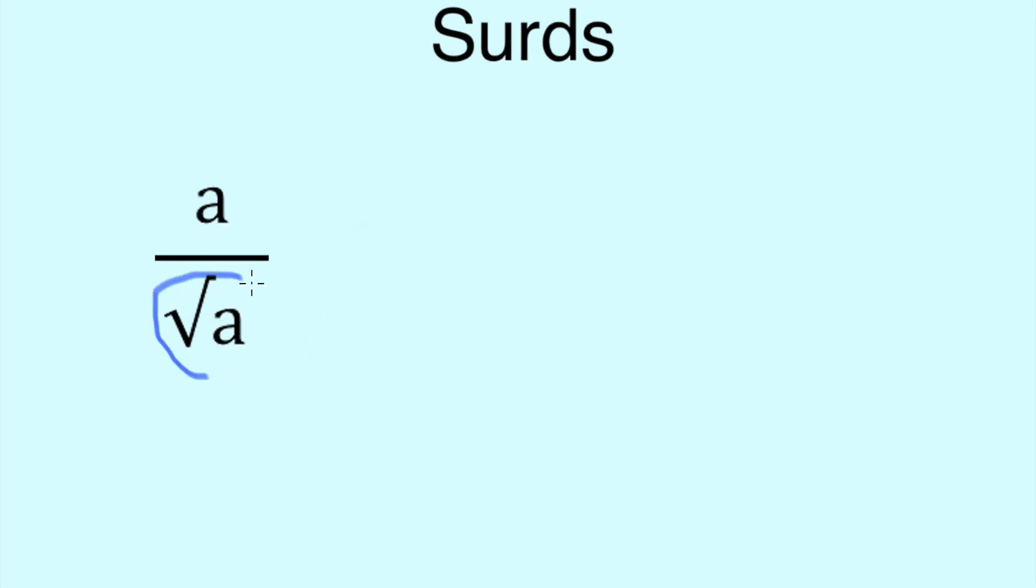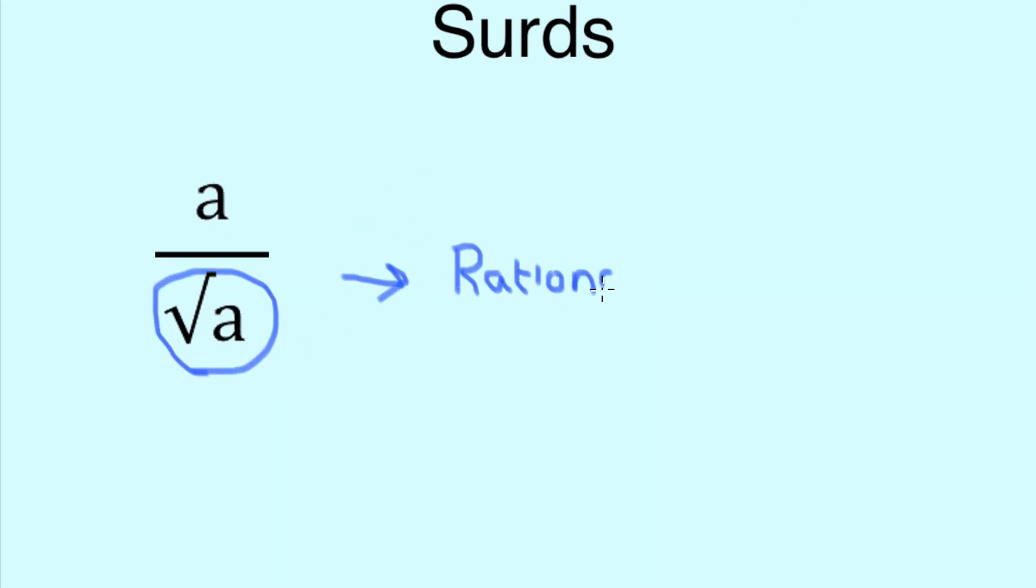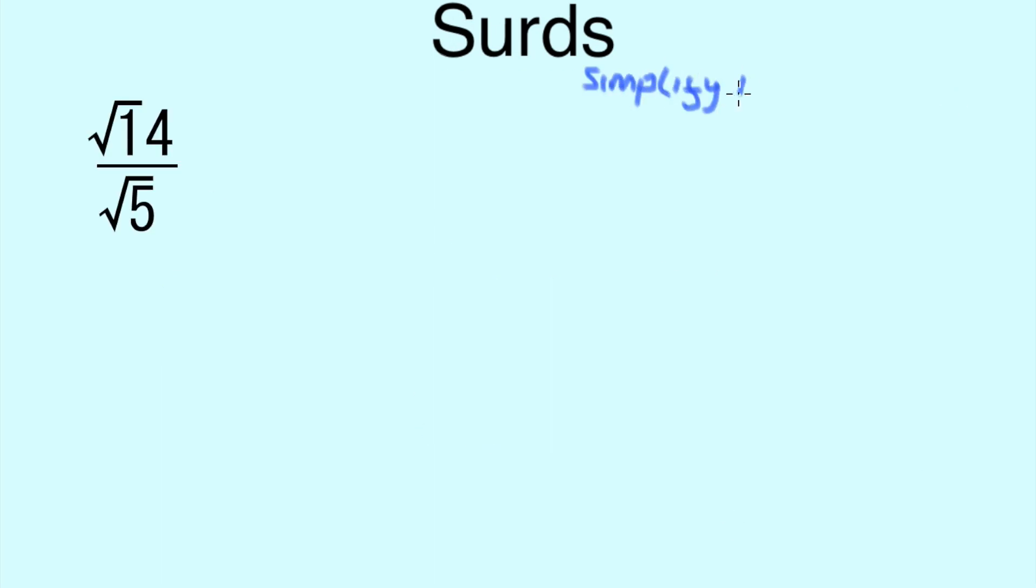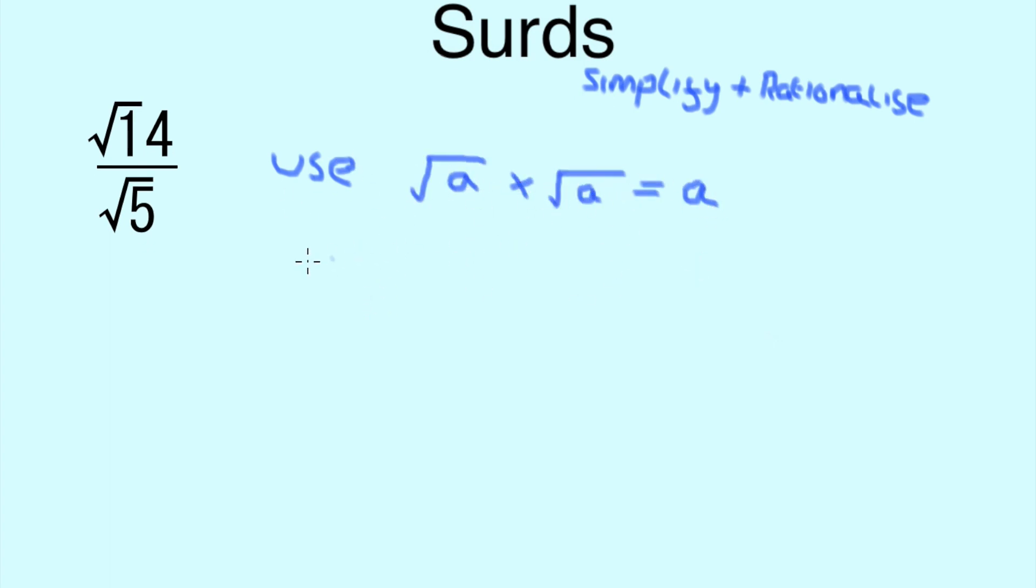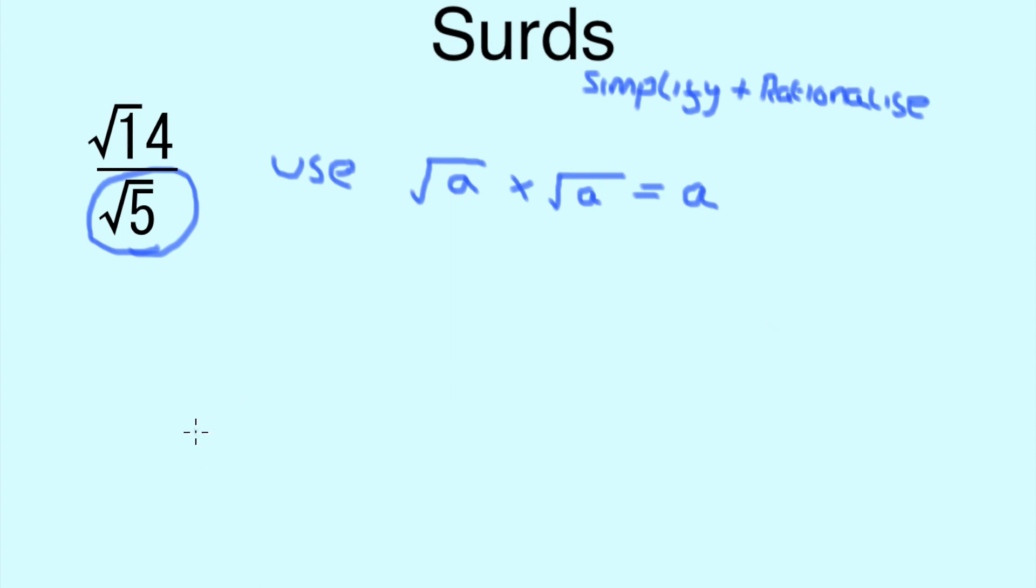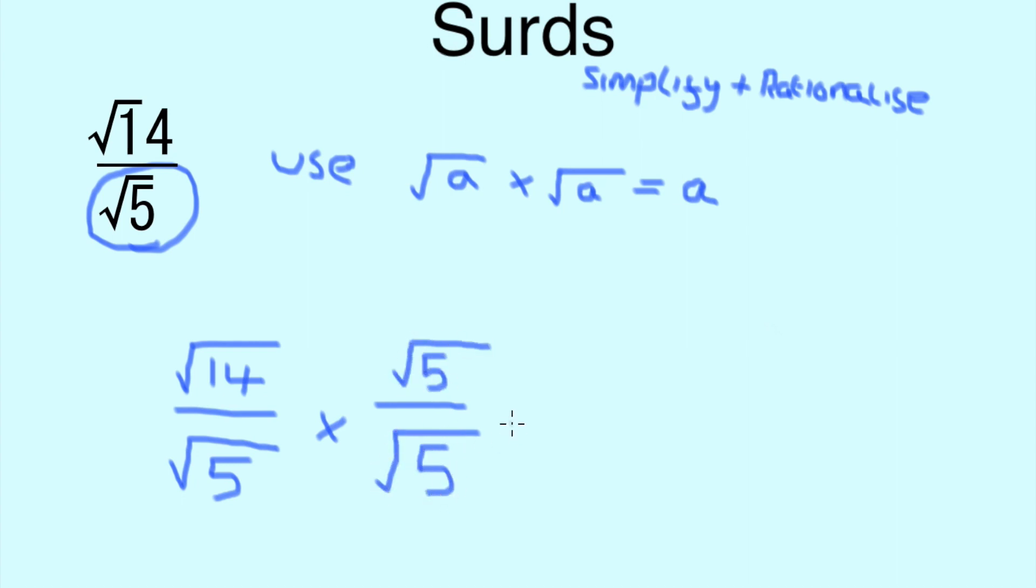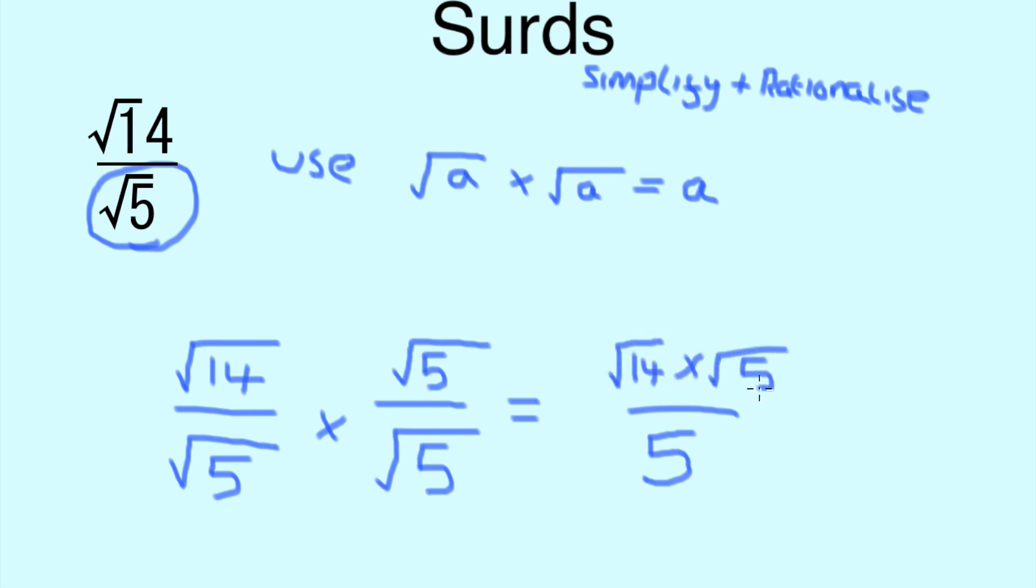The next rule we need to bear in mind is if the denominator has a root, we must rationalize it. So if we were to simplify and rationalize √14 over √5, we can remember the rule that √a times √a equals a. Applying this rule to our denominator, we must also remember that what we do to our denominator, we must also do to our numerator. So √14 over √5 times √5 over √5 gives us √14 times √5 over 5.